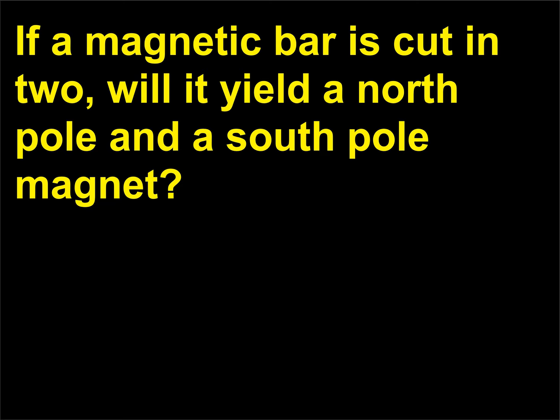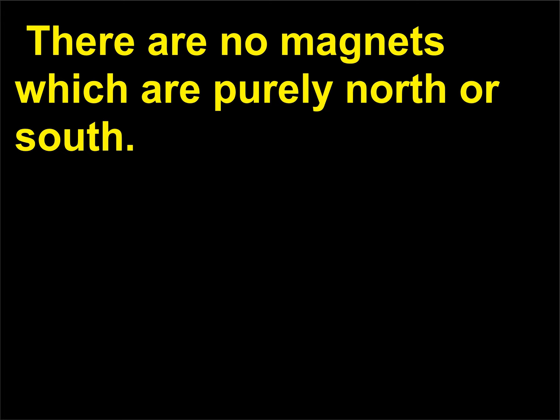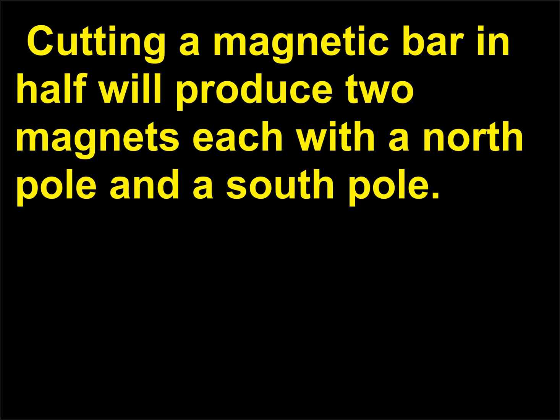If a magnetic bar is cut in two, will it yield a north pole and a south pole magnet? Every magnet contains both a north pole and a south pole — there are no magnets which are purely north or south. Cutting a magnetic bar in half will produce two magnets, each with a north pole and a south pole.